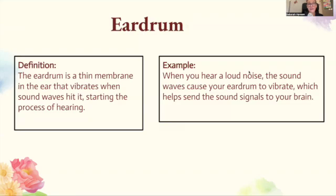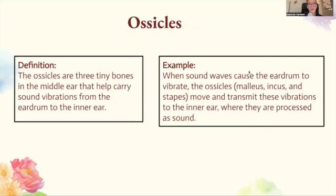The eardrum is a thin membrane in the ear that vibrates when sound waves hit it, starting the process of hearing. When you hear a loud noise, the sound waves cause your eardrum to vibrate, which helps send the sound signals to your brain. The ossicles are three tiny bones in the middle ear that help carry sound vibrations from the eardrum to the inner ear. When sound waves cause the eardrum to vibrate, the ossicles move and transmit these vibrations to the inner ear, where they're processed as sound.